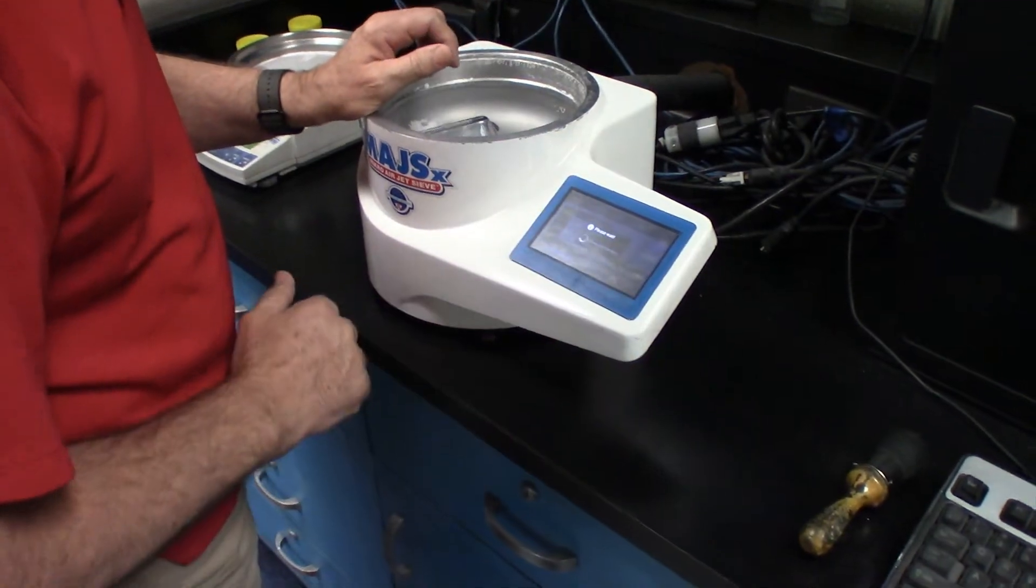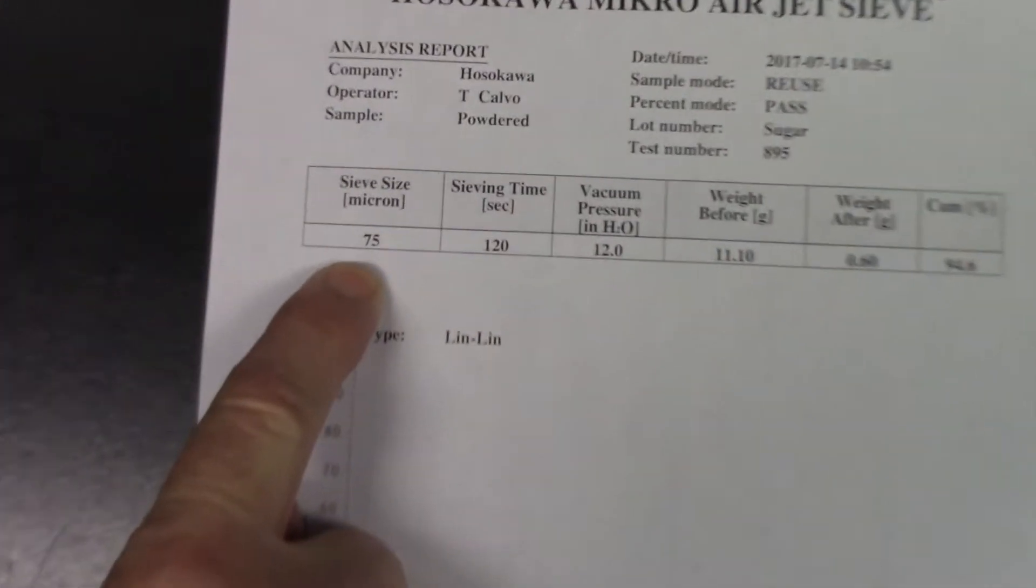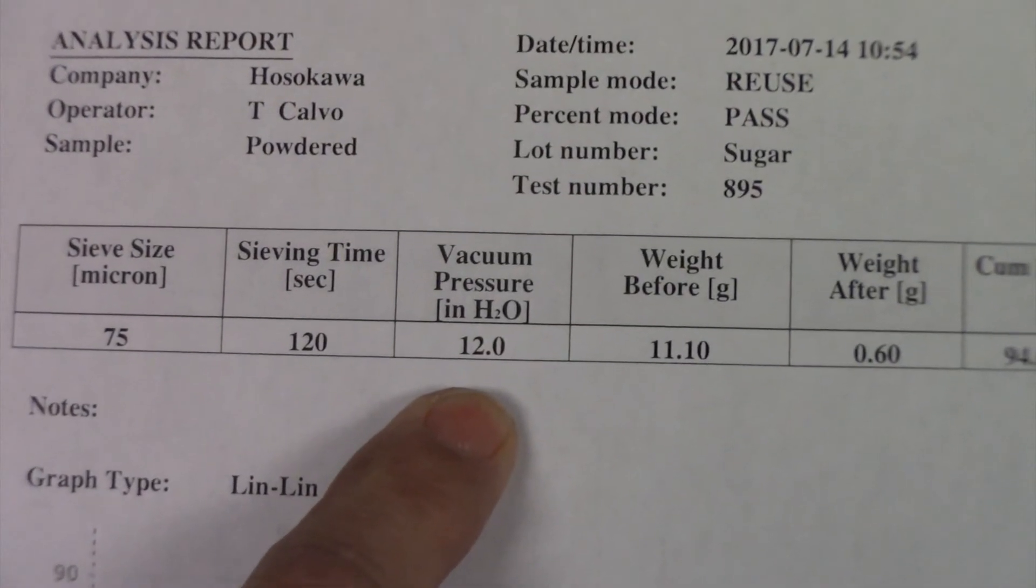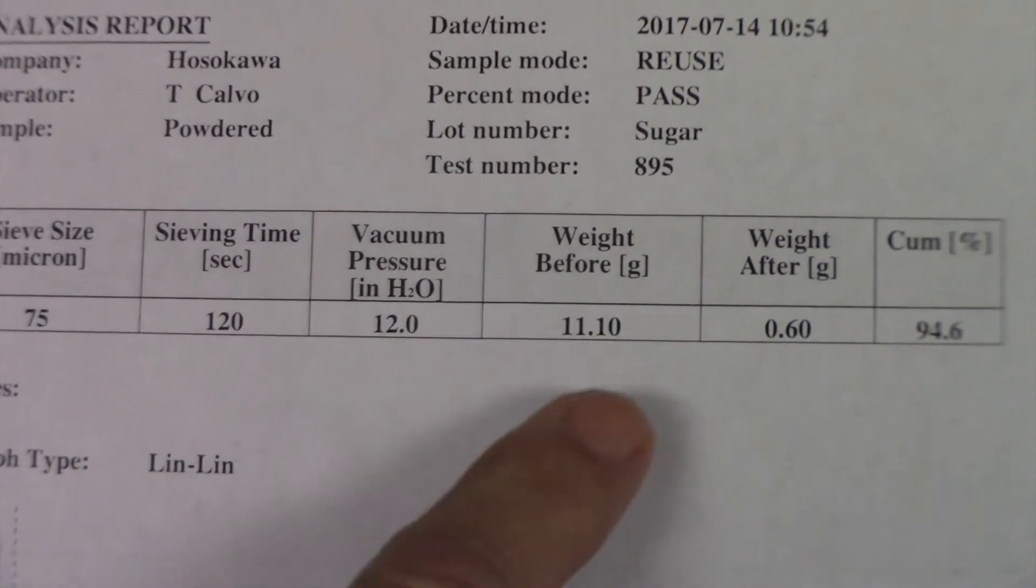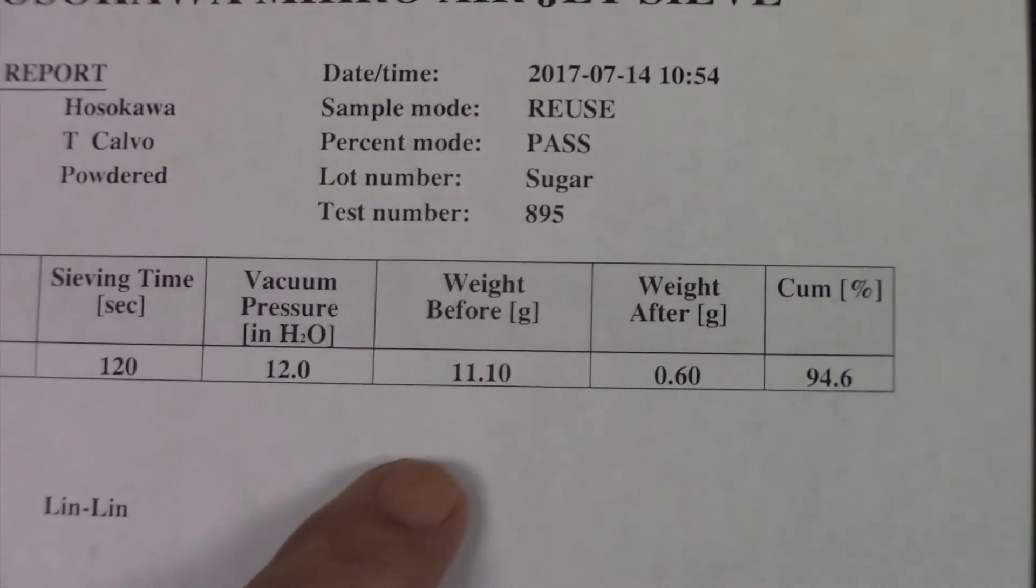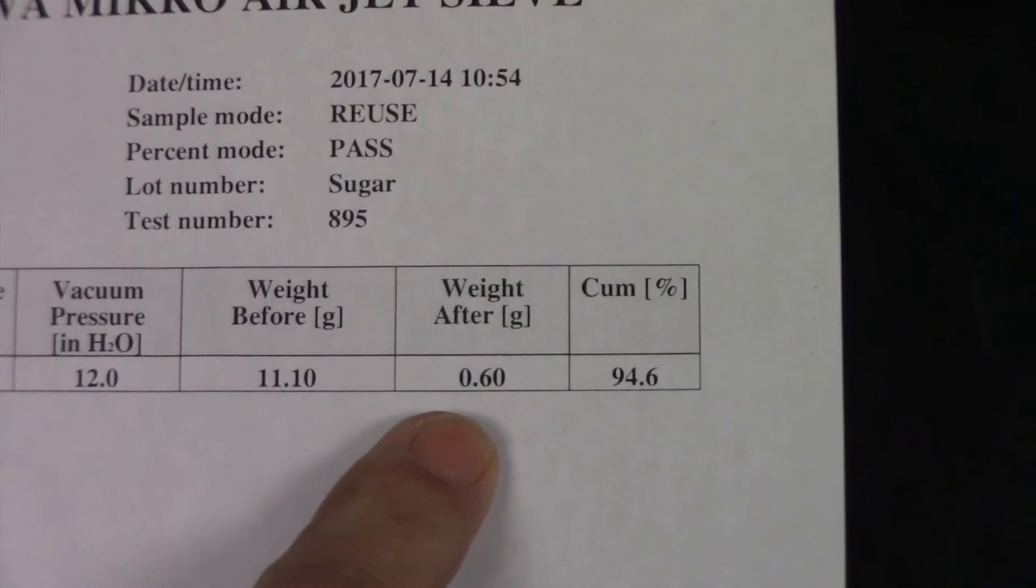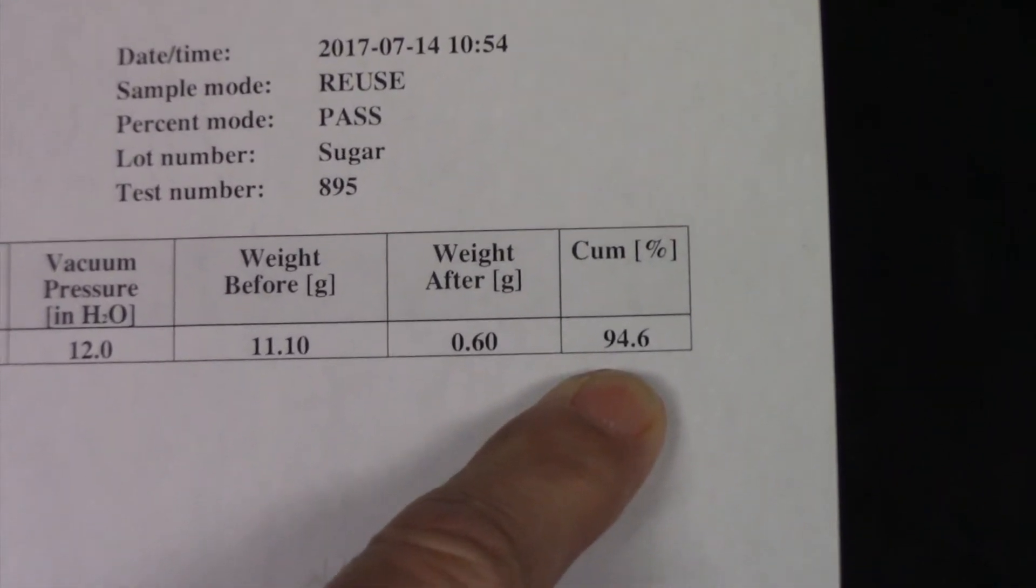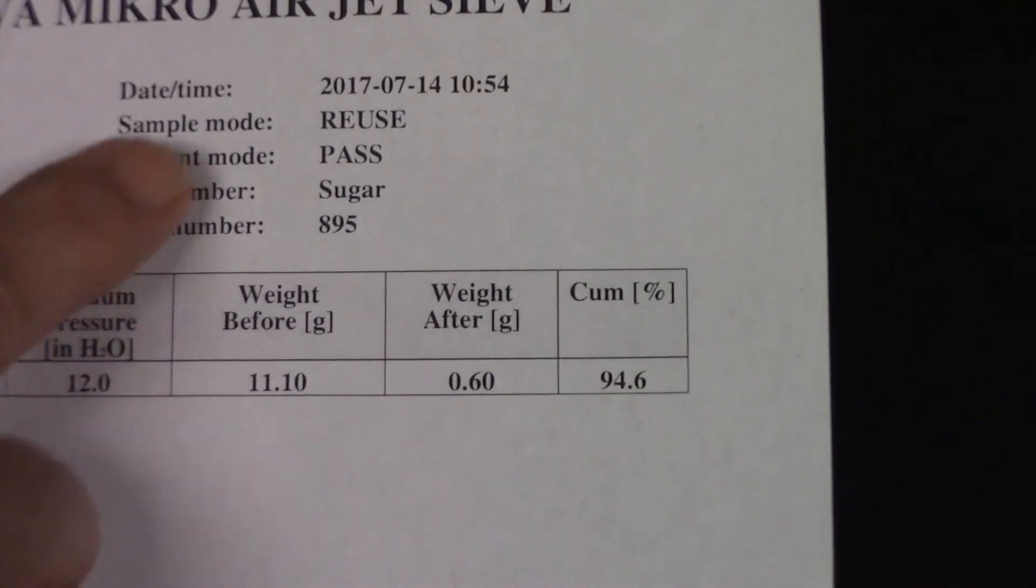What we're going to do now is print the results. Because we utilize the single screen, you see the size in microns, the sieving time, the vacuum pressure that was achieved, which is what we set it for, our sample weight prior to sieving, and our sample weight after sieving, which accumulates to a 94%, 95% passing.